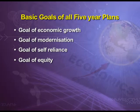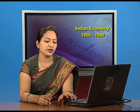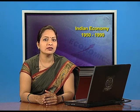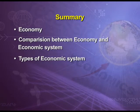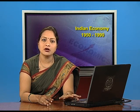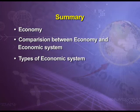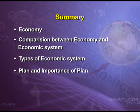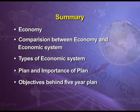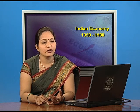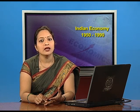All this was about the goals of five year plans. Let us revise what we have done today. We started our chapter with the term economy and compared it with the term economic system. Then we discussed three types of economic systems: capitalistic economy, socialistic economy, and mixed economy. Next, we discussed the term plan and the importance of planning. Lastly, today we covered the four basic objectives behind each five year plan: economic growth, self-reliance, modernization, and equity.